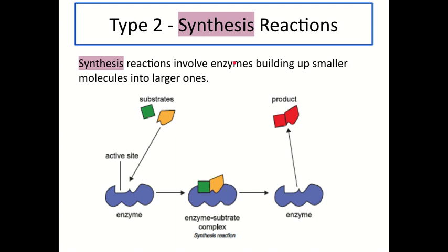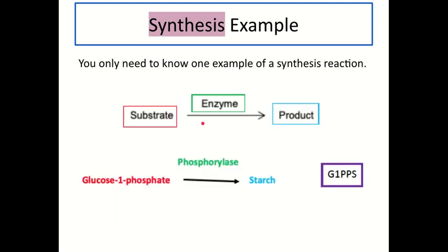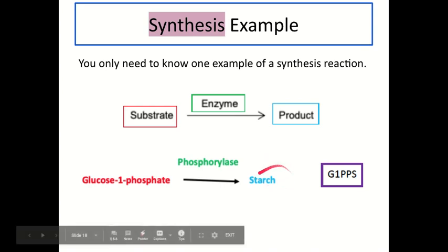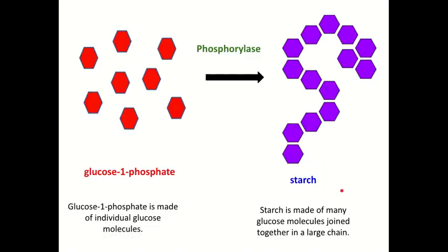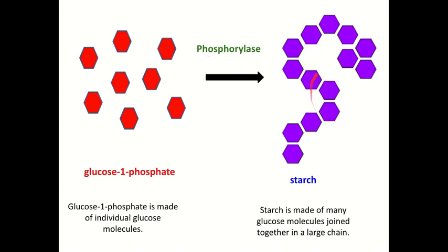Now we're moving on to our second type of enzyme reaction: synthesis reactions. Synthesis reactions are the opposite of degradation reactions — they involve enzymes building up smaller molecules into larger ones. There's only one example of a synthesis reaction you need to know: glucose-1-phosphate is the substrate built up by the enzyme phosphorylase to make the larger product starch — remember G1PPS. Small glucose molecules are joined together by the enzyme phosphorylase to make the very large molecule starch.